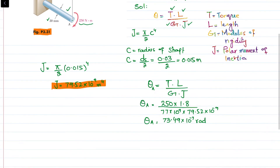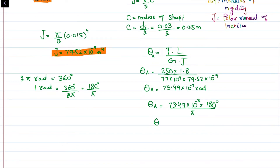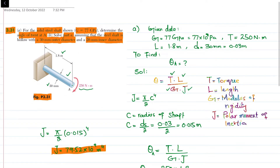This result is in radians, and we want to convert to degrees. Since 2π radians = 360°, one radian = 180°/π. Therefore, theta_A = 73.49 × 10⁻³ × (180°/π), which gives theta_A = 4.21°. This is the answer to part A.